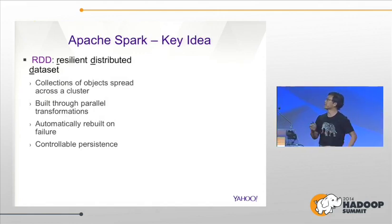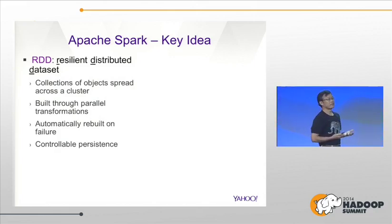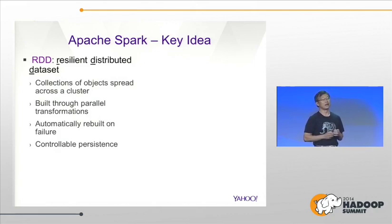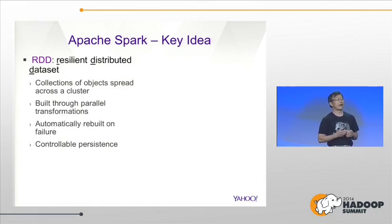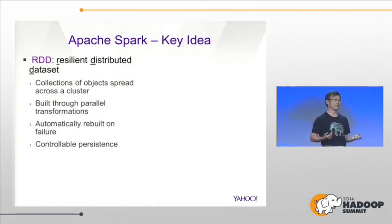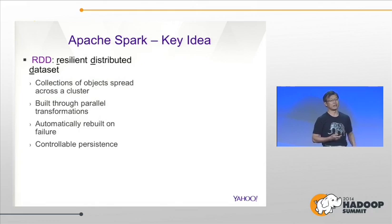In order to understand Spark a little more, let me explain some of the basic concepts. Spark has one single core concept one needs to understand, called the Resilient Distributed Dataset, or RDD. You guys have probably heard RDD mentioned in several talks. An RDD is a very simple concept — it is a collection of objects distributed across the cluster. You could imagine your log files or lots of different kinds of data sets being modeled as RDDs.